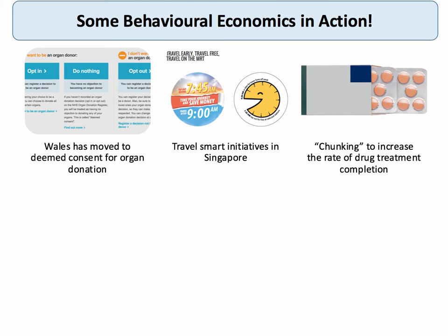One problem in the health service is patients prescribed antibiotics who, after four or five days of treatment, feel a little better and stop taking them, failing to complete the prescription. One behavioural approach is chunking — instead of giving a patient 12 orange pills, you give them four green, four yellow, and four blue pills. Patients are then much more likely to complete their course of treatment.